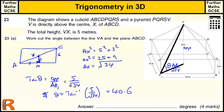That answer of 40.6 degrees is worth 4 marks. You get 2 marks for getting root 34 — if you worked out the full diagonal length first, you get 1 mark for that and 1 mark for halving it. Then 1 mark for writing the correct tan method, and 1 mark for getting an answer between 40.5 and 40.8 degrees.